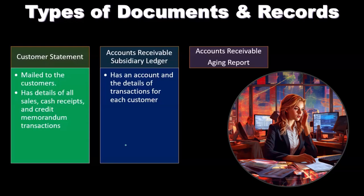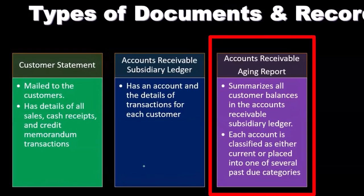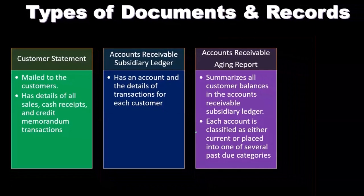The accounts receivable aging report summarizes all customer balances in the accounts receivable subsidiary ledger. Each account is classified as either current or placed into one of several past due categories. On the balance sheet we have accounts receivable representing what is owed to the company by customers, and then we break that out by customer subsidiary ledger.